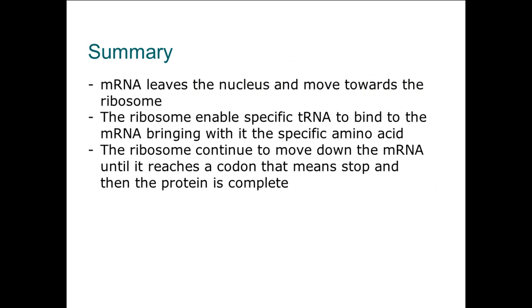In summary, the first thing that happens in translation is that the mRNA leaves the nucleus and moves towards the ribosome in the cytoplasm. The ribosome then enables transfer RNA or specific transfer RNA to bind to the mRNA. It binds to the triplet code, and the transfer RNA also has something referred to as an anticodon, which is a triplet code. That transfer RNA, along with its anticodon, brings with it a specific amino acid.